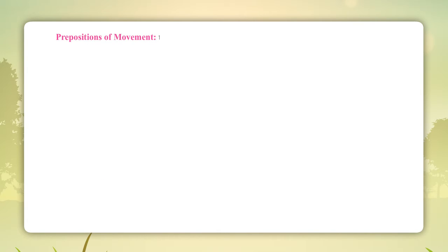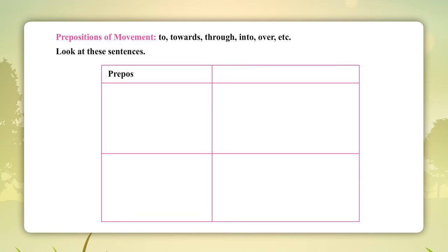Prepositions of movement: to, towards, through, into, over, etc. Look at these sentences. To: For a specific place, person, position. A. I am going to the doctor. B. She is going to meet Radha. C. Keep to the right of the road.